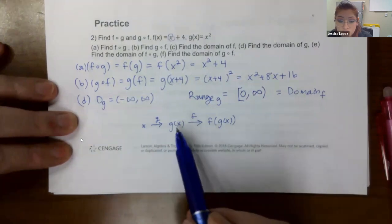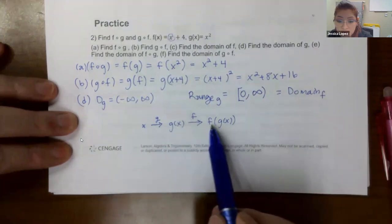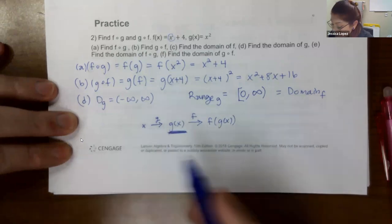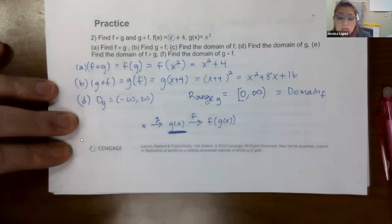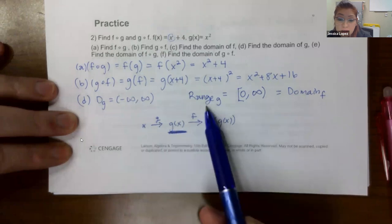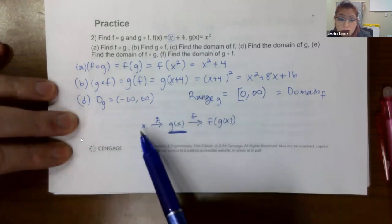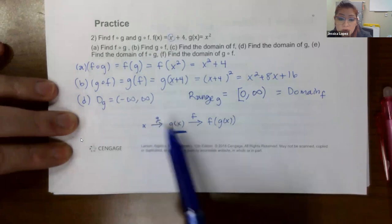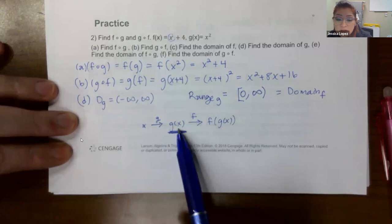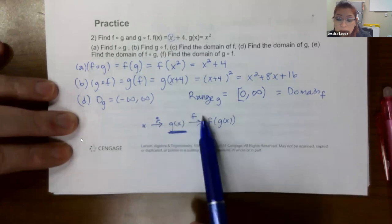Essentially, when finding the domain of f of g, you need to figure out what numbers come out of g — those are the range of g — because those are the inputs going into f. Take your x, figure out all numbers you could plug into g, then figure out what those outputs look like. Once you know what those outputs look like, those are the inputs for f.